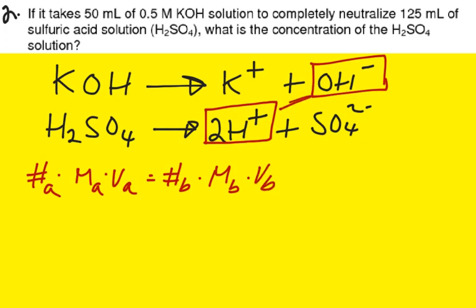Now, once again, why are we using this equation? Because our ratio of H+ to OH- is not one to one. And simply our number sign A would be two, because we have two H+, and our number sign B would be simply one. And we read the question.